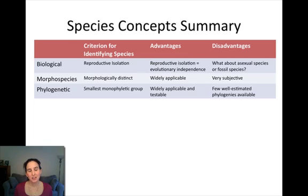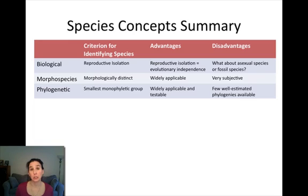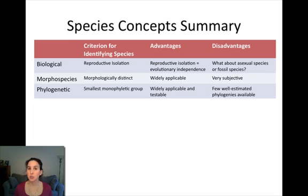Good morning everybody. Today I want to talk about species concepts in action. If you remember from class on Tuesday, there are three basic species concepts most commonly used in biology. The first is the biological species concept: if you're looking at two populations of organisms and those two populations don't or can't interbreed with one another, we consider them to be separate species.